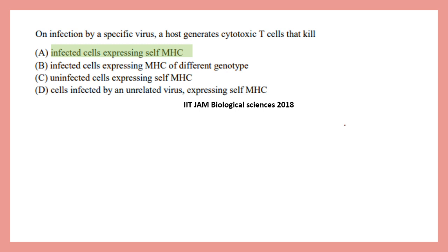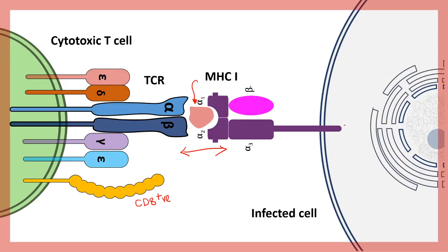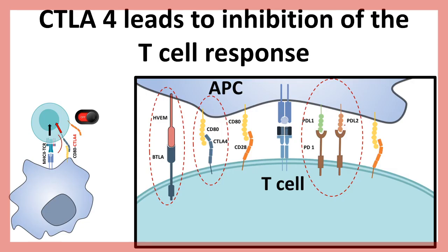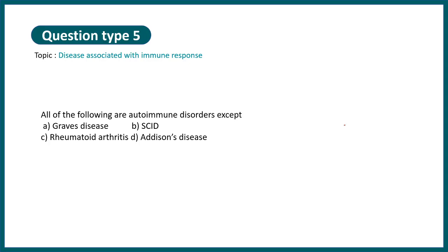Questions are being asked from receptor interactions. To clarify: when an infected cell is present, there is an interaction between MHC class I and TCR, and that is how the cytotoxic T cell is activated. CTLA-4, mentioned in other questions, is a suppressor of T cell activity. All of these receptors and their functions are a very important aspect.